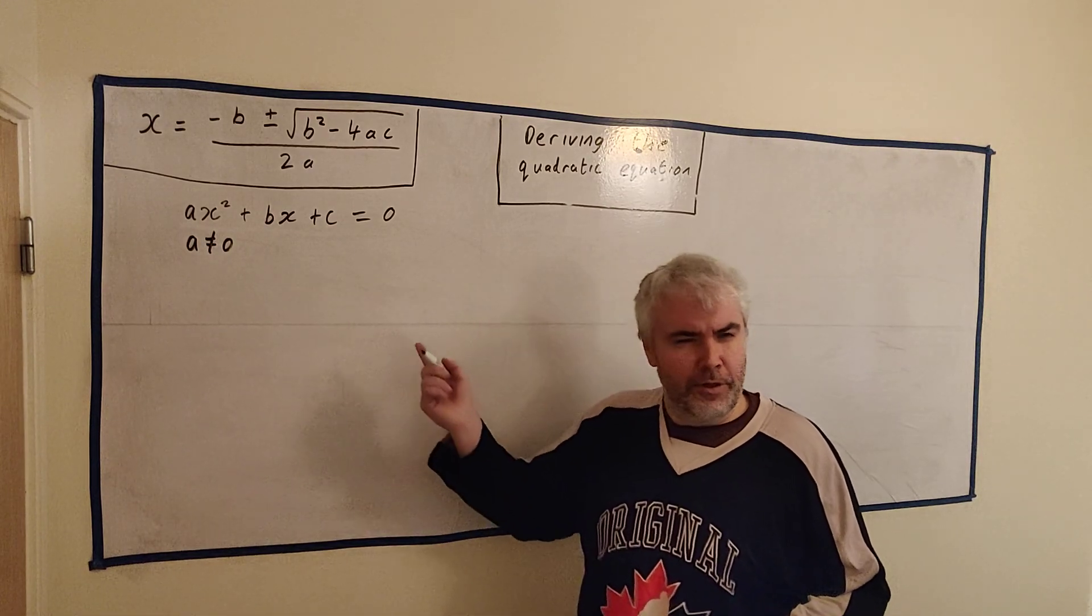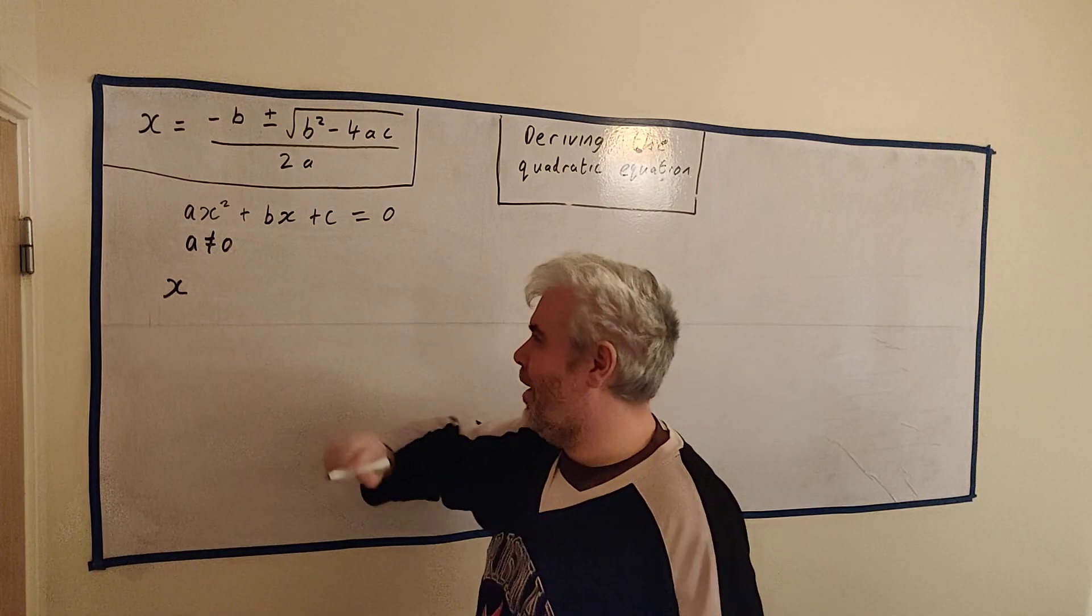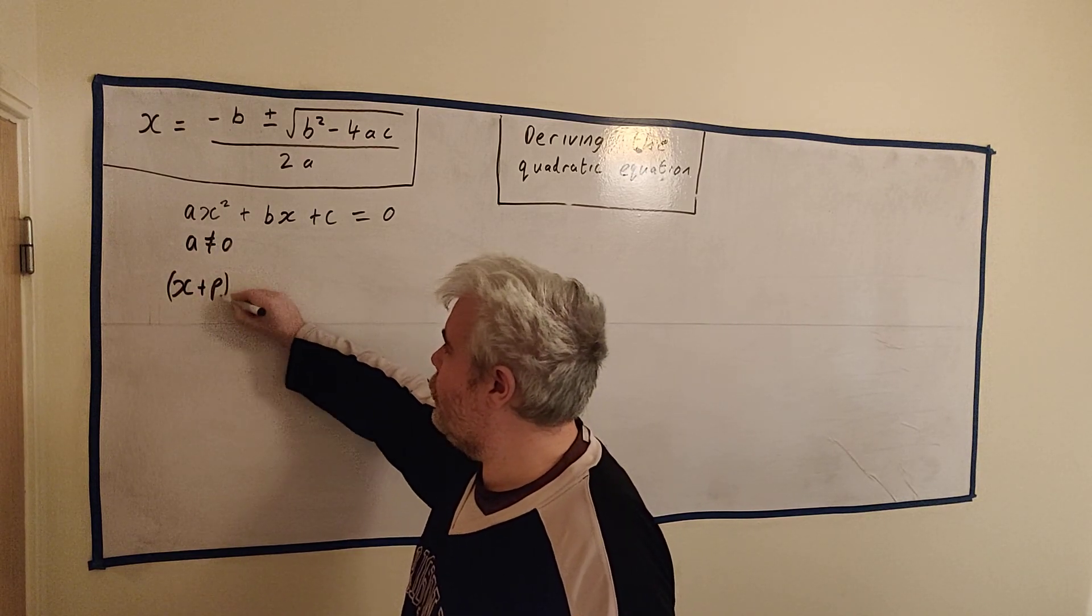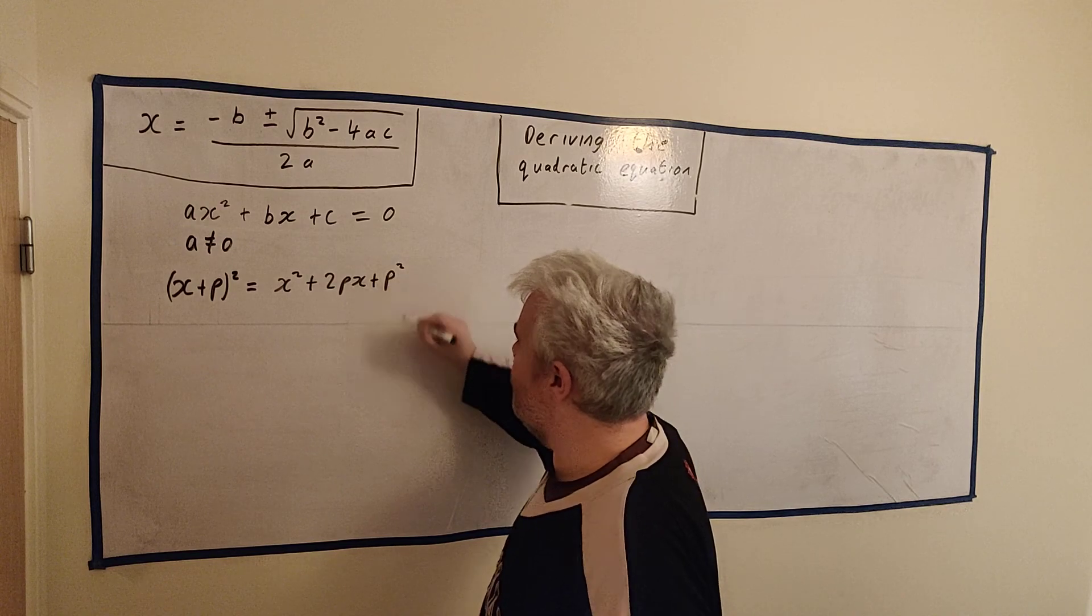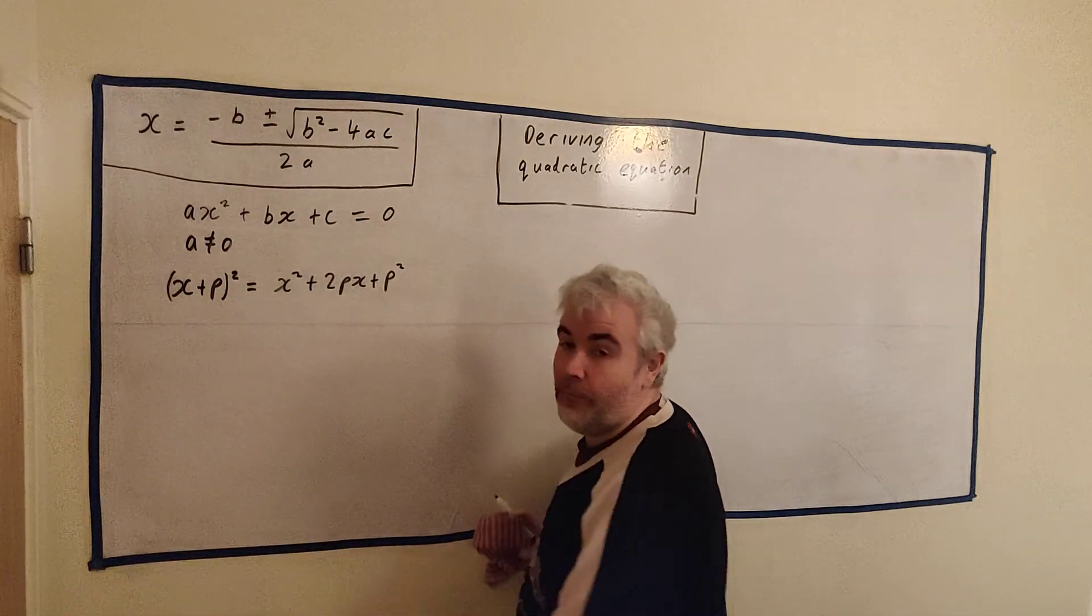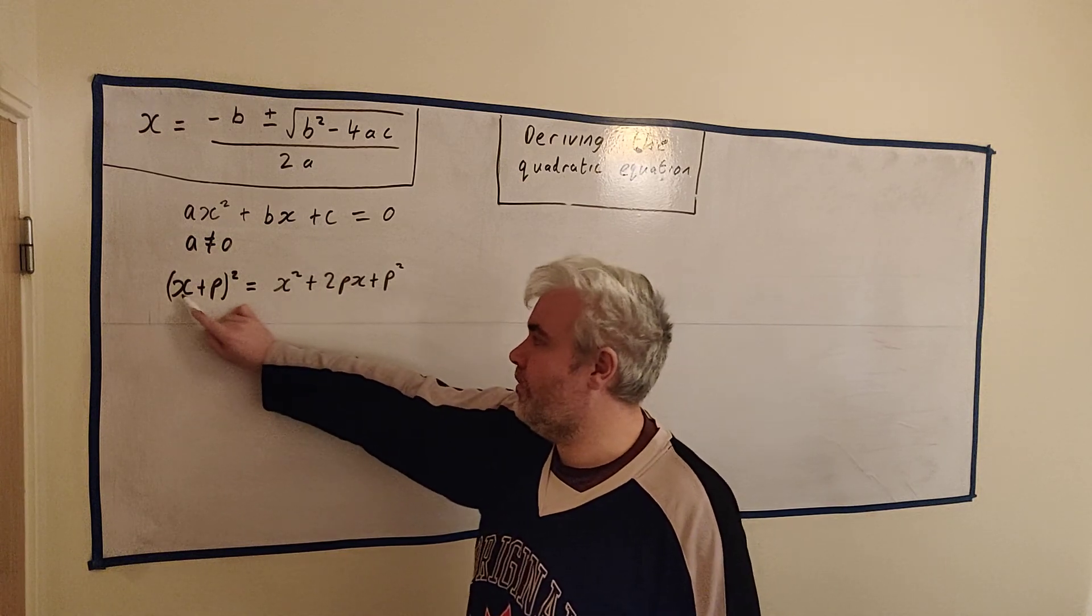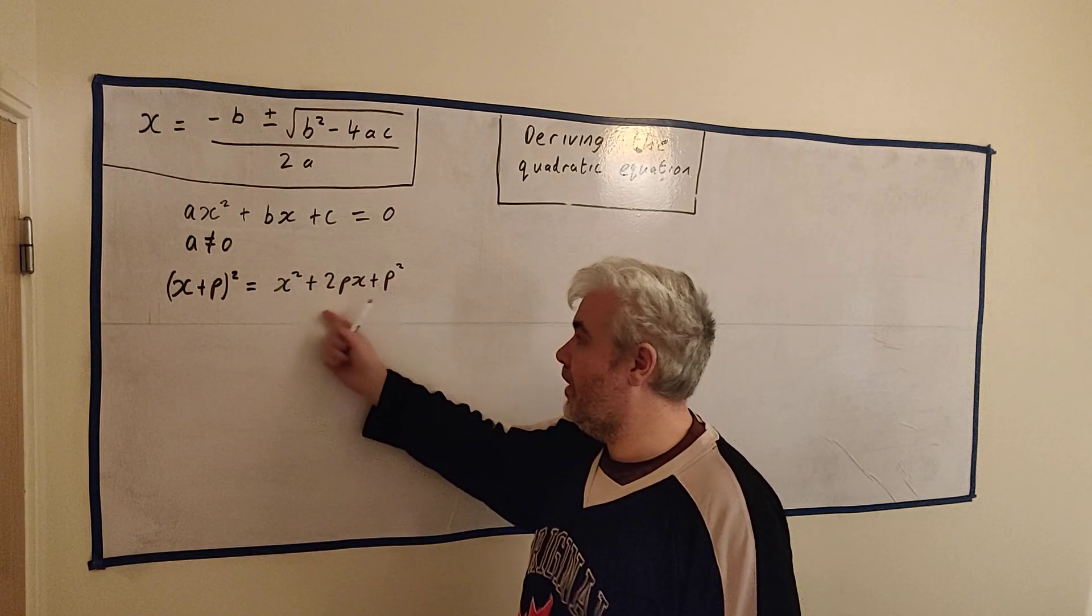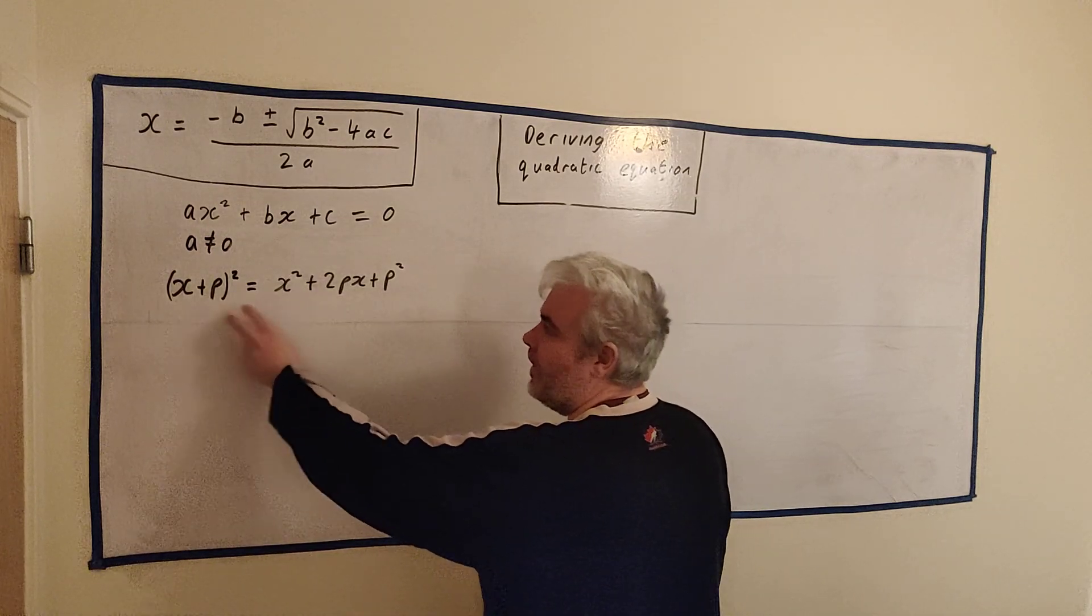In the last video I used an identity. I'm going to use that as well. So just before I start, I'll write this identity out. I better use a different letter because I already have a here. x plus p squared is equal to x squared plus 2px plus p squared. This is just, remember anything squared is just multiplied by itself. So that's x plus p multiplied by x plus p.